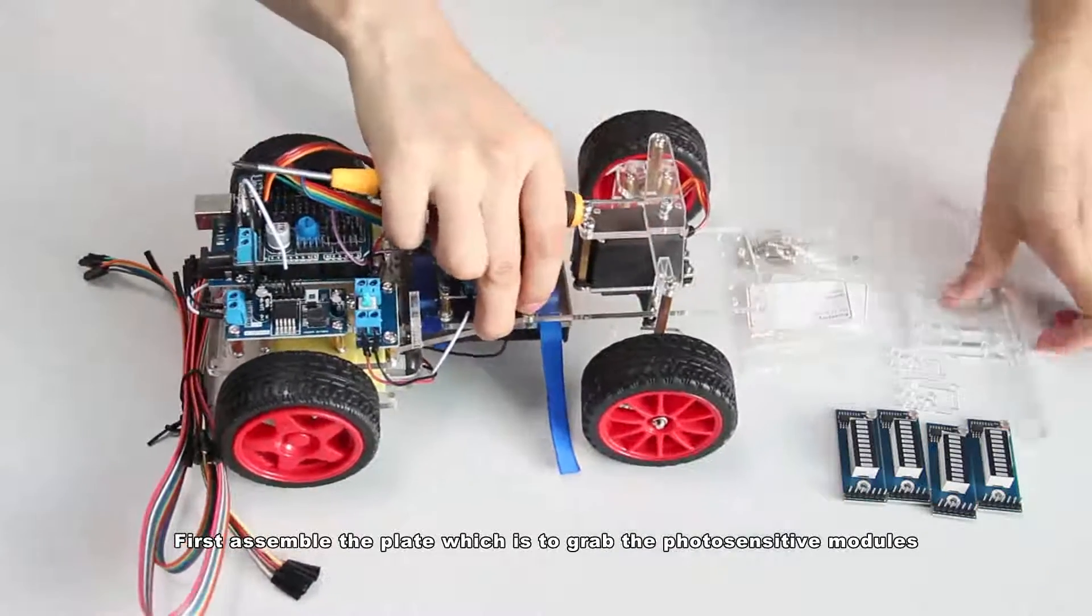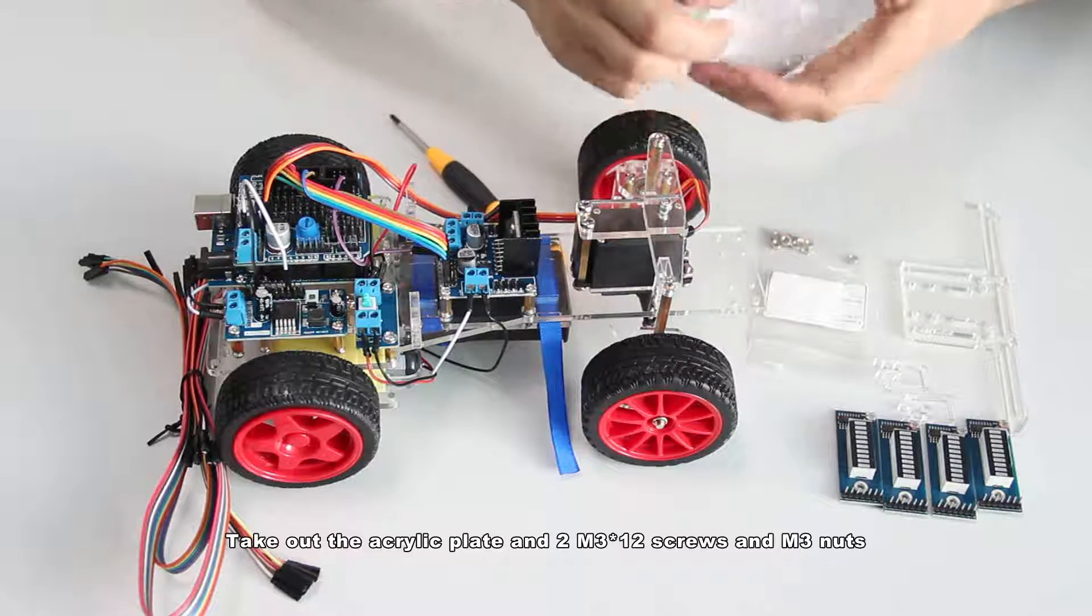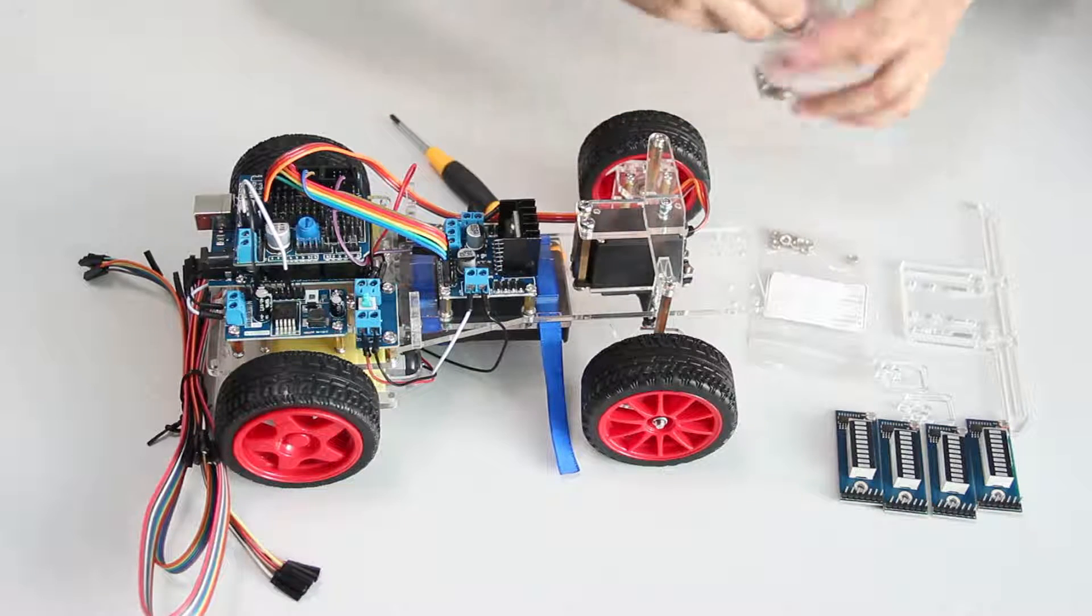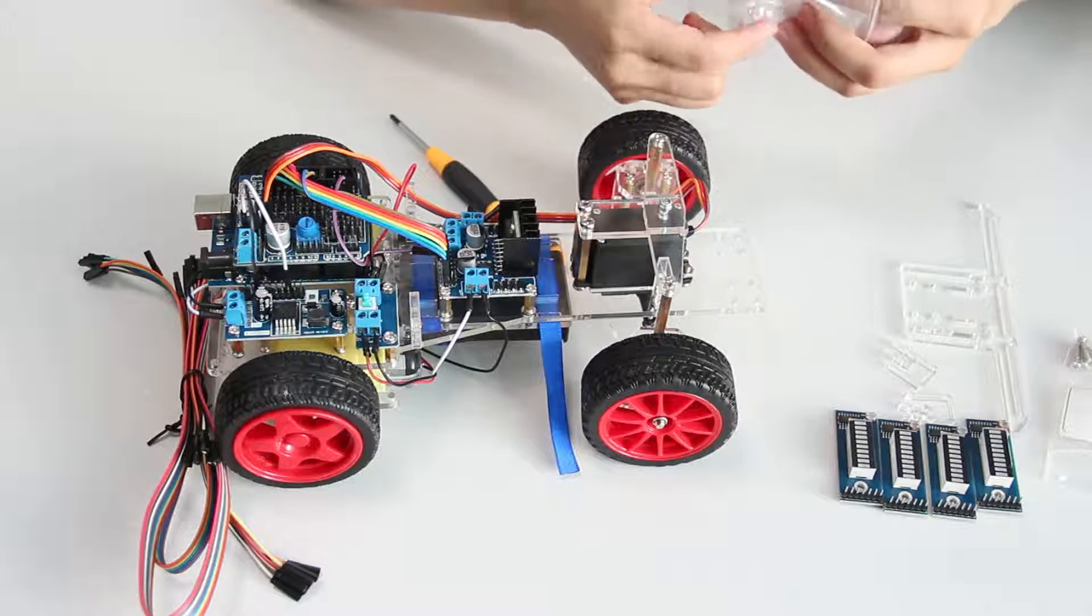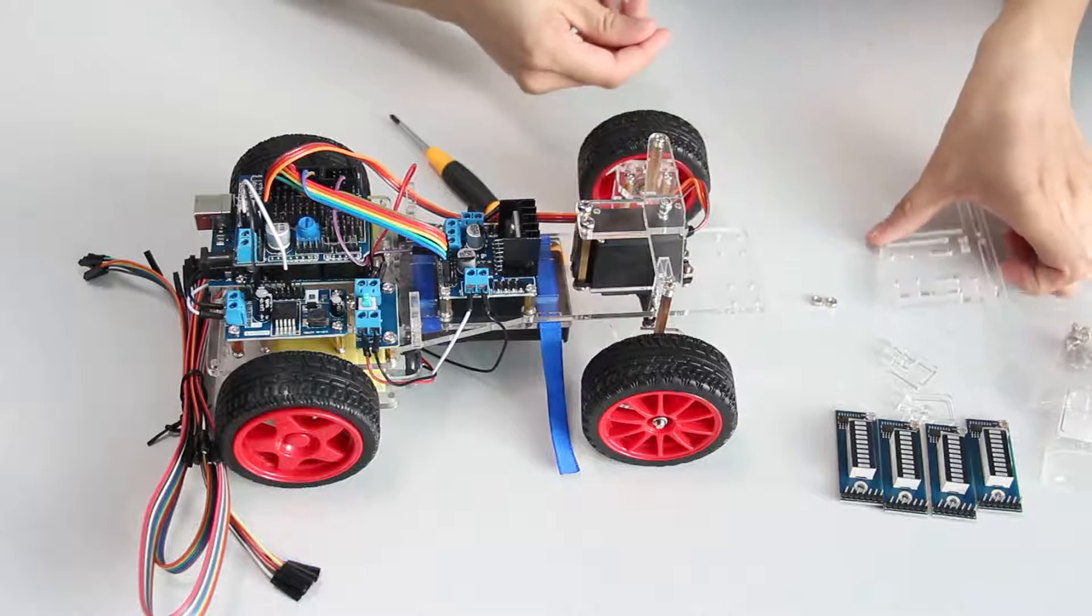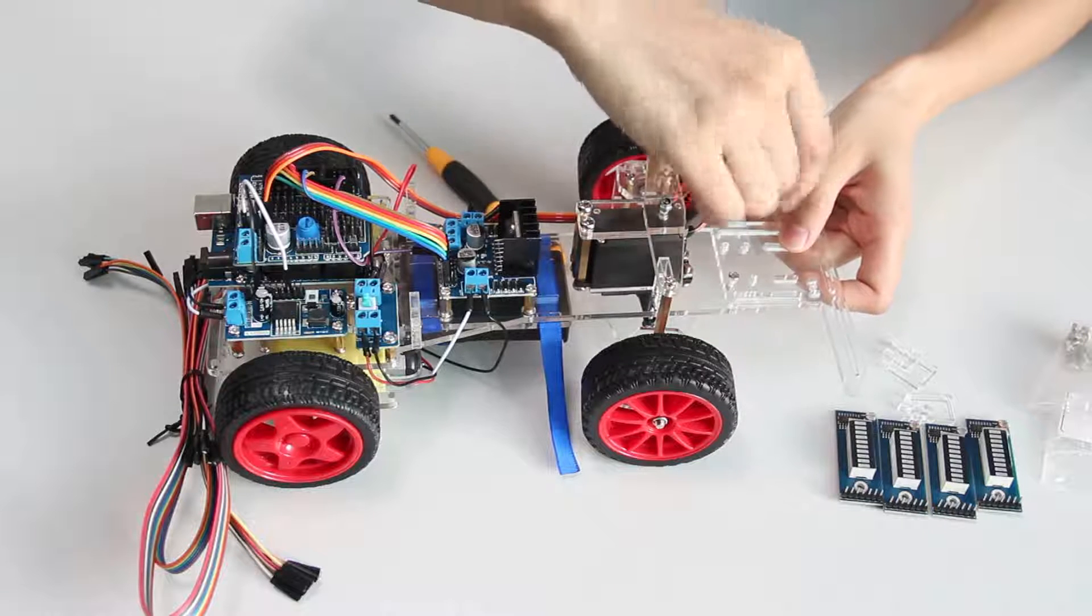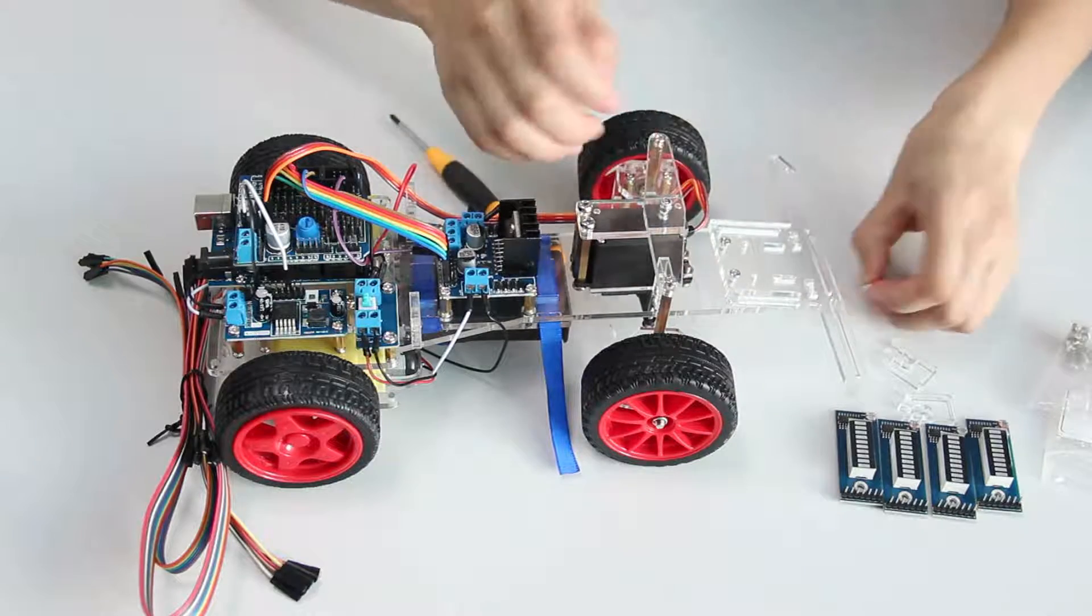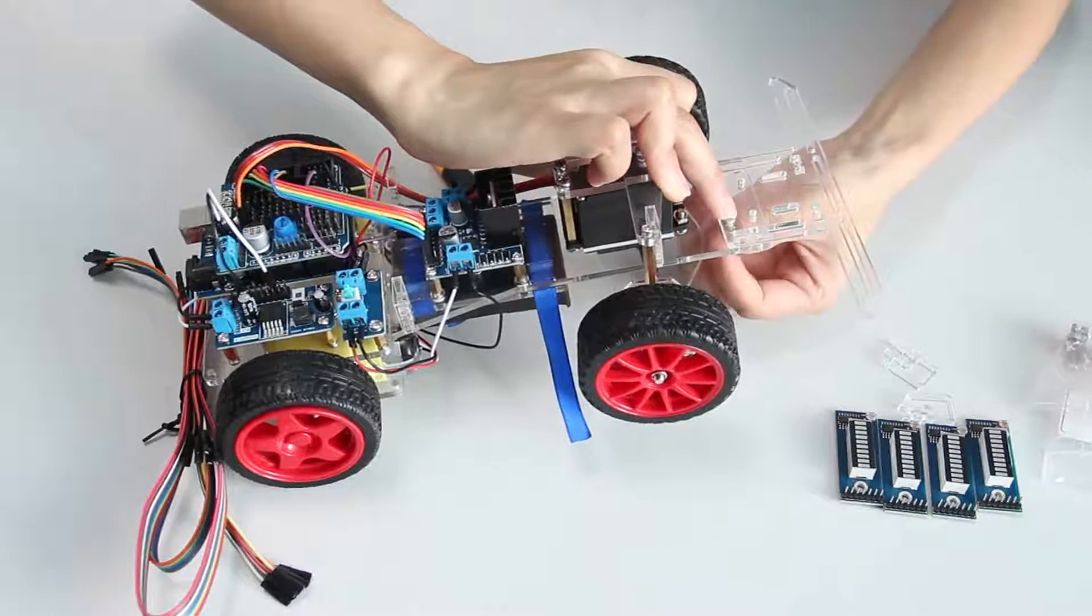First, assemble the plate which is to grab the photosensitive modules. Take out the acrylic plate and two M3x12 screws and M3 nuts. Insert the screw and tighten them.